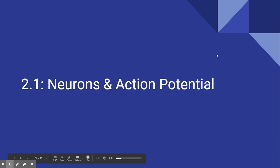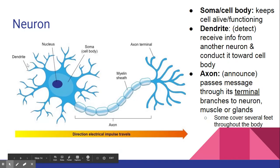All right folks, we are moving into unit two and we're going to start talking about neurons and action potential. This is going to be how a neuron fires. We'll talk about neurotransmitters in our next video, also about section 2.1, but for now we are focused on what a neuron is and the action potential — how it fires.